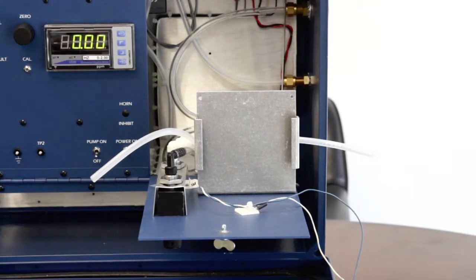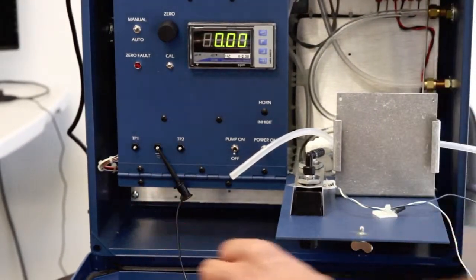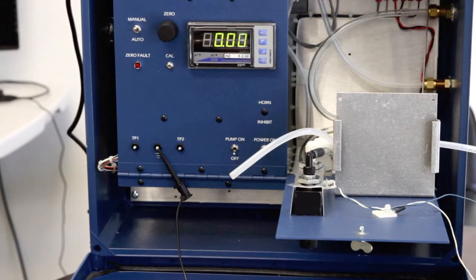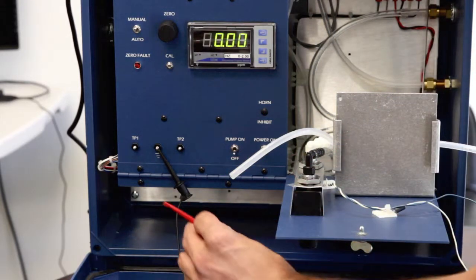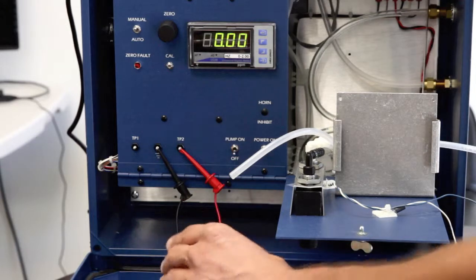Connect the negative lead of the digital voltmeter to ground, which is the ground designation on the front panel. Connect the positive lead of the digital voltmeter to TP2 on the front panel.